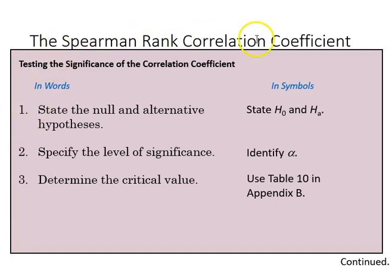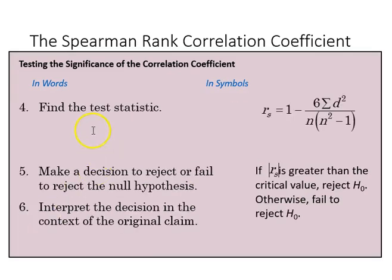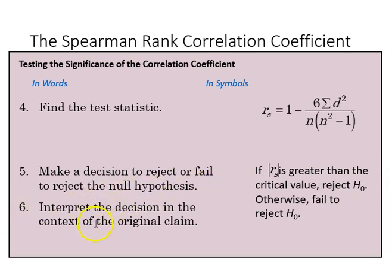These are the steps for the Spearman rank correlation coefficient. We start with our null and alternative hypotheses, identify our alpha level, and find our critical values. We then calculate our test statistic, compare that to the critical value, and make our decision about whether or not to reject the null. If the absolute value of RS is greater than the critical value, we reject the null; otherwise we fail to reject it. Then we interpret the decision in the context of the original claim.